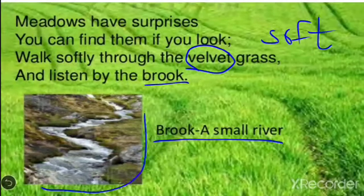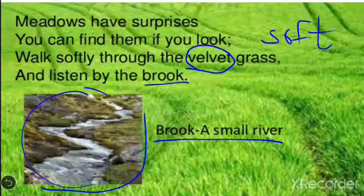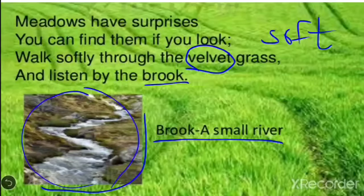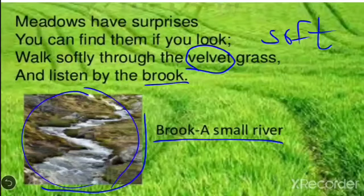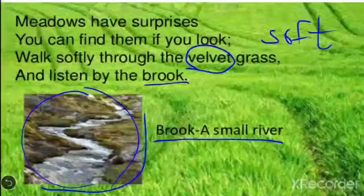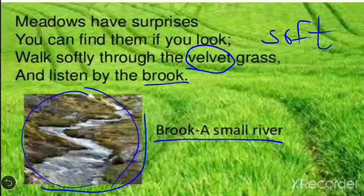Looking at this picture, it's a small river, a small stream — that's known as brook. So in this first stanza, the poet is telling that meadows have wonderful things, different and many surprises. But for that, we have to first look at it. We have to walk very softly on the grass and listen to the voice of the water. The poet is telling that if one pays attention, a meadow has several surprises to offer. It is a great pleasure to walk through the soft grass and hear the sound of the brook.